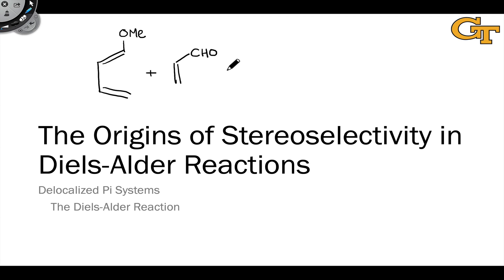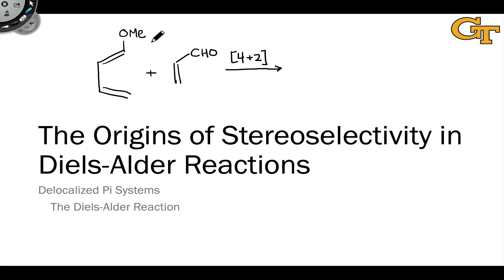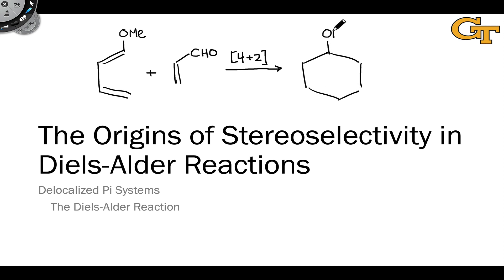In the last video, we learned how to predict the regioisomeric product, or the regiochemistry of 4 plus 2 or Diels-Alder cycloadditions between electron-poor and electron-rich dienes and dienophiles using resonant structures. From that video, we would conclude that the carbon bearing the methoxy substituent and the carbon bearing the aldehyde substituent would end up in a 1-2 relationship in the major product, connected to adjacent carbons in the cyclohexene product.